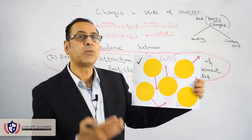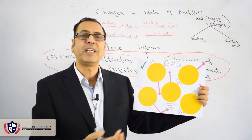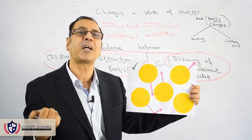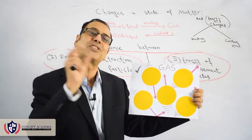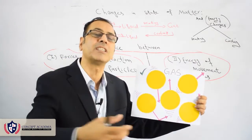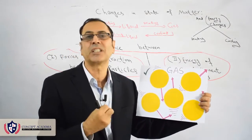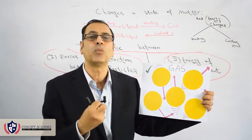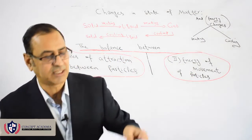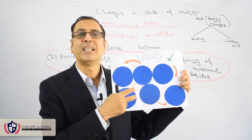By heating we can convert solid to liquid and liquid to gas. And by cooling, we extract energy from gas particles. When we take out energy from gas particles, they will move slower and slower. As we go on cooling, we go on taking heat energy from them and they come closer and closer. The forces of attraction between them will appear and it will be converted into liquid — some particles are touching, there are some gaps, and this is liquid.